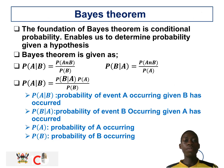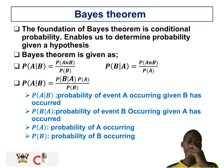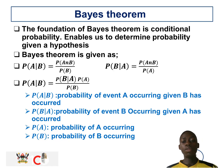When we proceed with Bayes' Theorem, the foundation is conditional probability, which enables us to determine the probability given a hypothesis. Bayes' Theorem is given by: the probability of A given B equals the probability of B given A — the probability of B occurring given that A has occurred — multiplied by the probability of A, divided by the probability of B.